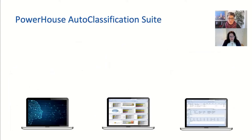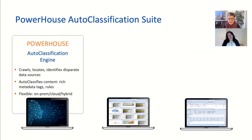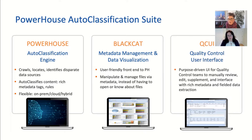Our auto classification suite is called Powerhouse. It's built on the auto classification engine — the beast that crawls and locates content, does all the hard work in automating, and applies the rich metadata tags. It is flexible in deployment: cloud-based, but we can do on-prem or hybrid if needed. Built on top of that is Black Hat, the metadata management platform — a user-friendly interface where an end user views reports, manipulates data, and sees what we have. The third component is QCUI, a quality control user interface for heavy data teams who need to get in and augment and manage metadata on each file.